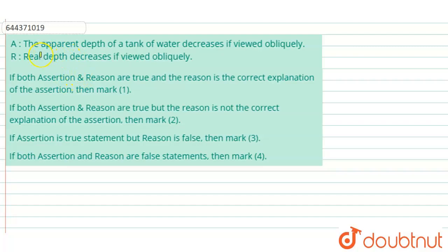The given problem is simply an assertion and reason type problem. The assertion states the apparent depth of a tank of water decreases if viewed obliquely.